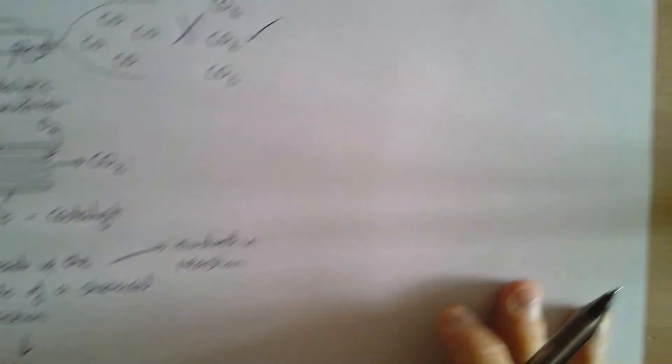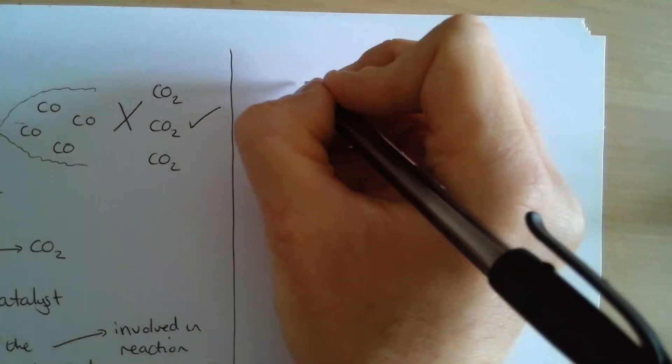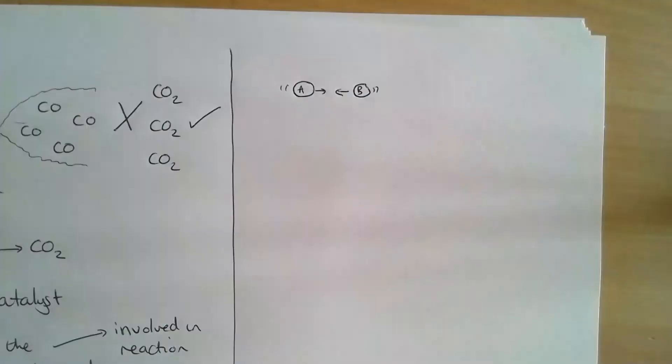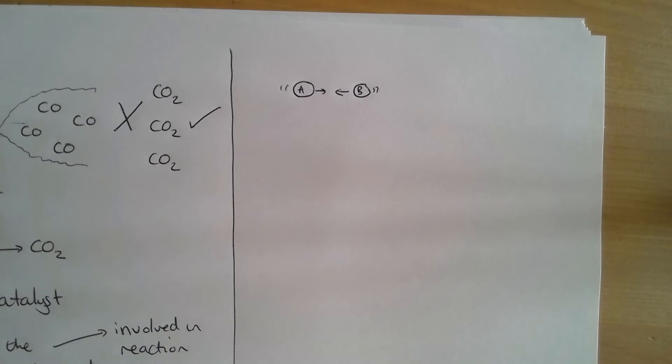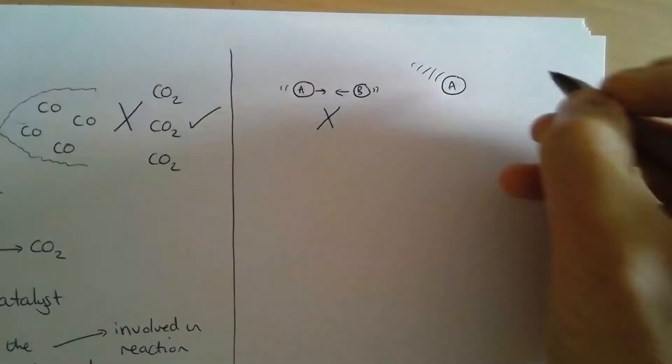So let's think about how they work. We know that a reaction happens when two particles collide with lots of energy. Here are my two reactant particles A and B, and they're not moving very fast, so when they hit each other no reaction happens. Here's A and B moving much faster, so when these hit each other they do react.